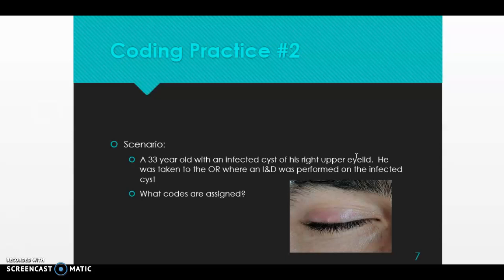For the procedure, remember when doing PCS coding we identify the root operation first. The root operation for this I&D is 'drainage' — incision and drainage. Go to D for drainage in the PCS index, then go to 'eyelid.' We're draining the eyelid. Under drainage, eyelid, go to 'upper,' then 'right,' and you should see the characters 089IN.